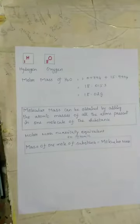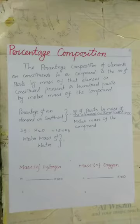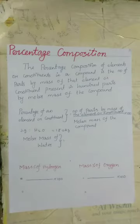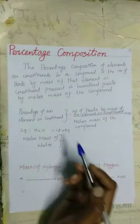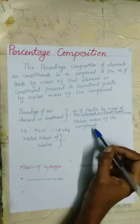Our next topic is Percentage Composition. We have seen how to determine the entities present in a substance. Scientists also need to know the percentage of elements present in a compound. This information helps to determine the purity of the chemical compound under observation. The percentage of an element or constituent in a compound is the number of parts by mass of that element or constituent present in a hundred parts by molar mass of the compound.